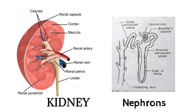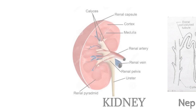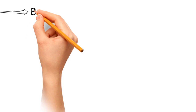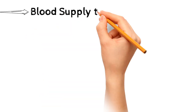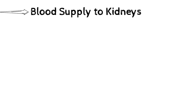Now we talk about blood supply of the kidney. Kidneys are supplied by renal arteries which are branches of the abdominal aorta. Venous blood of the kidney is drained by renal veins which open into the inferior vena cava.